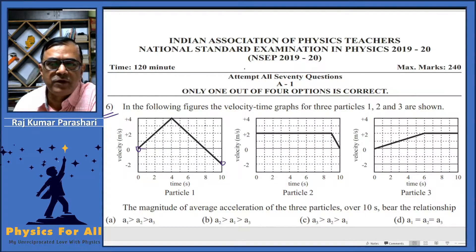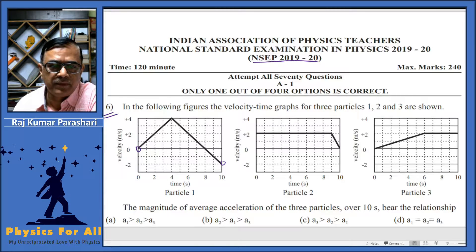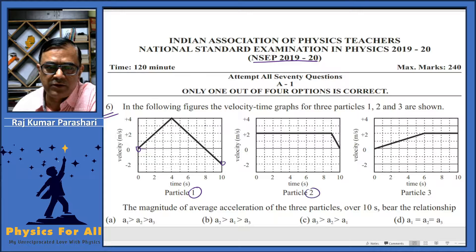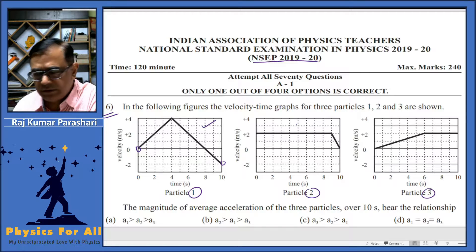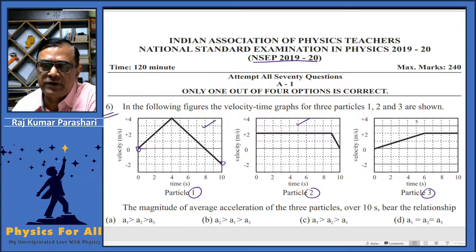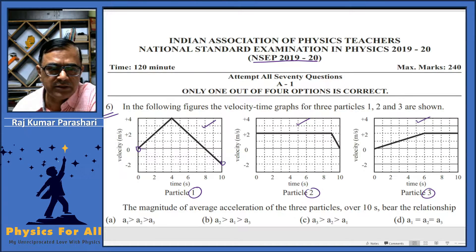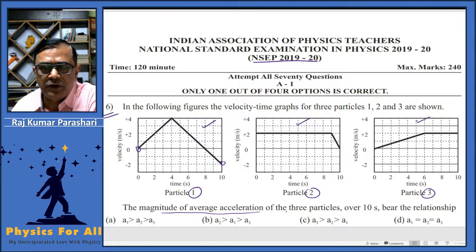Now question number 6 of NECP 2019-20. In this problem we have three particles: particle 1, particle 2, and particle 3. This is the velocity-time graph for particle 1, this is the velocity-time graph for particle 2, and this is the velocity-time graph for particle 3. We are supposed to find the relationship between the magnitude of average acceleration for all three particles over 10 seconds.